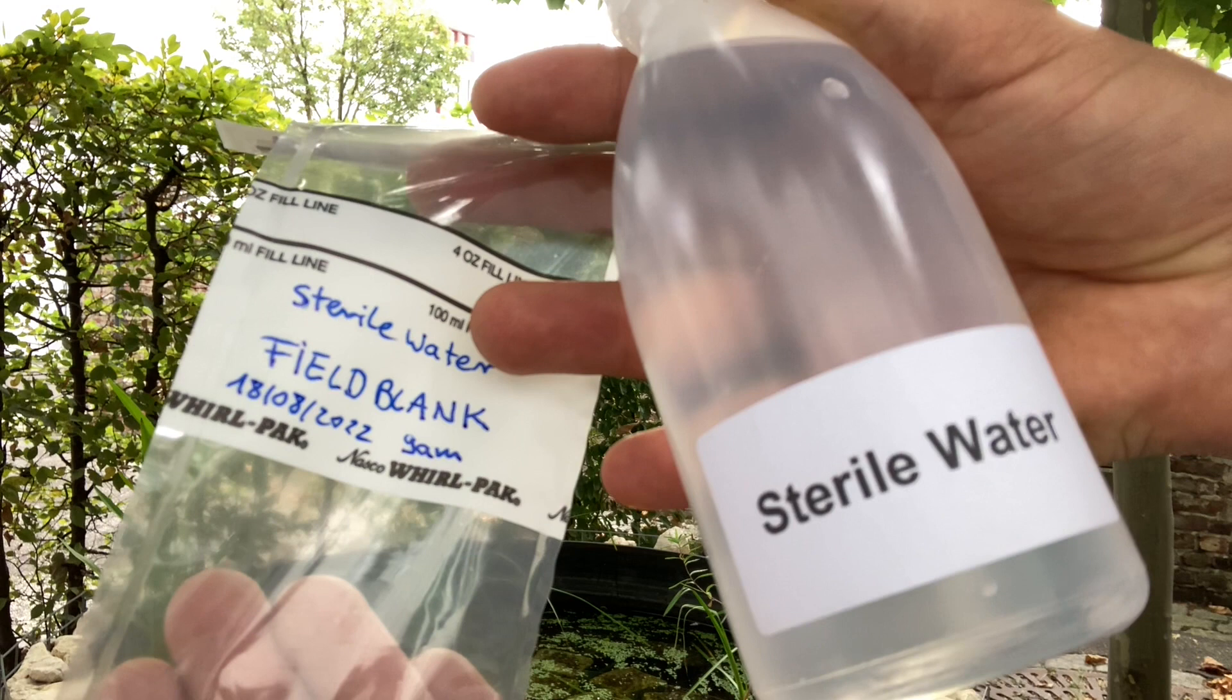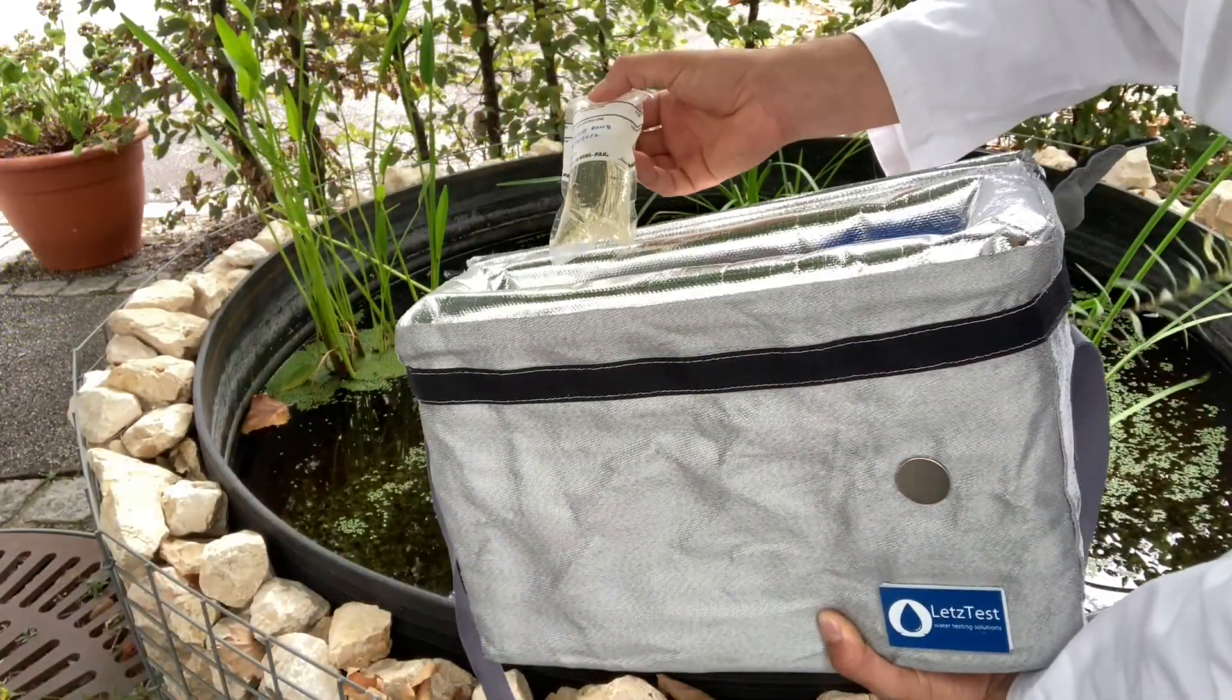For quality control, we suggest you collect sterile water in the field using the same procedure, called the field blank. This sample will also be tested and must have zero bacteria. If it does not, your sampling technique must be improved and your results are not valid.